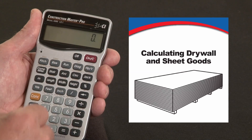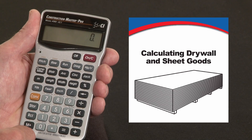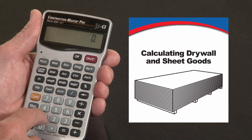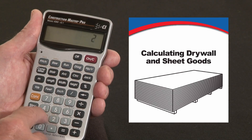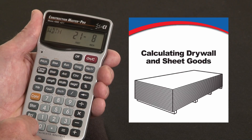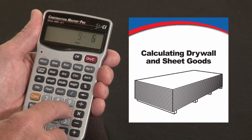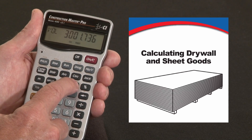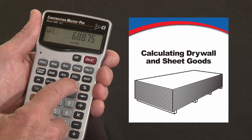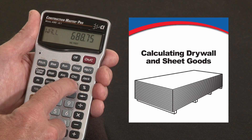Now let me show you one other way to do it using the Length, Width, and Height functions, where you can calculate the surface area and sheetrock needed for four walls of a room and the ceiling all in one pass. Say it's a 14 foot 7 inch long room that's 21 feet 8 inches wide and the walls are 9 feet 6 inches high. The second press of Height gives me volume, which in this case is irrelevant. Press it again — there's my wall surface area: all four walls, 688.75 square feet.